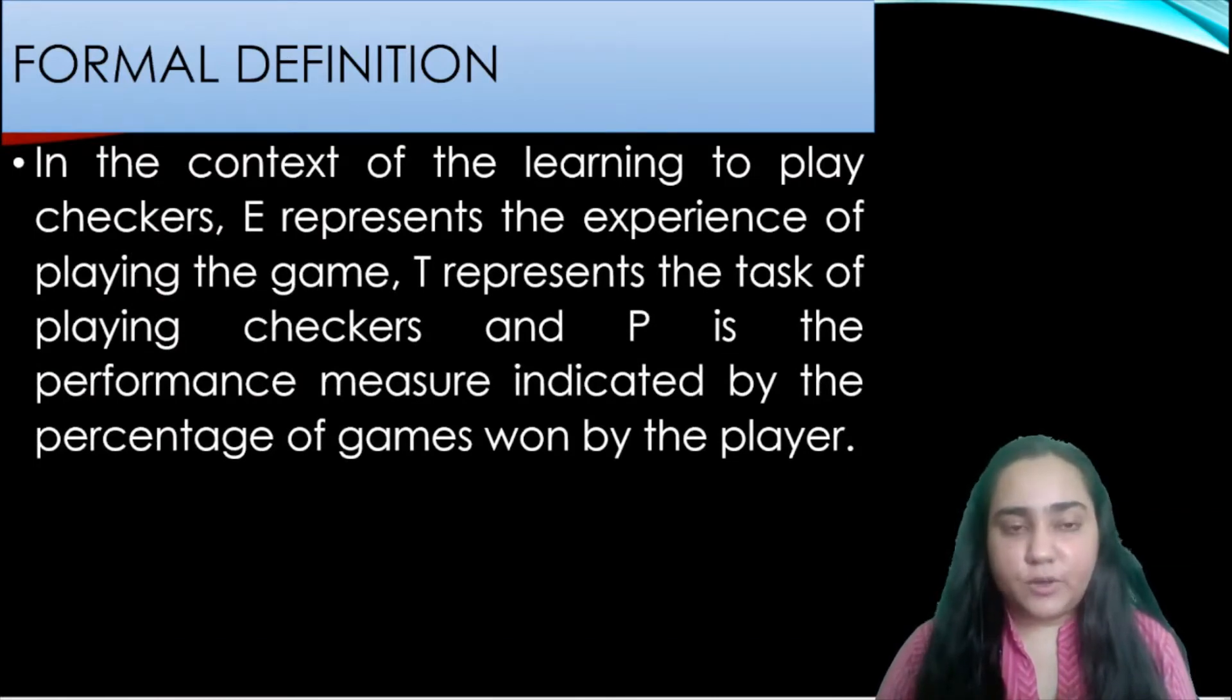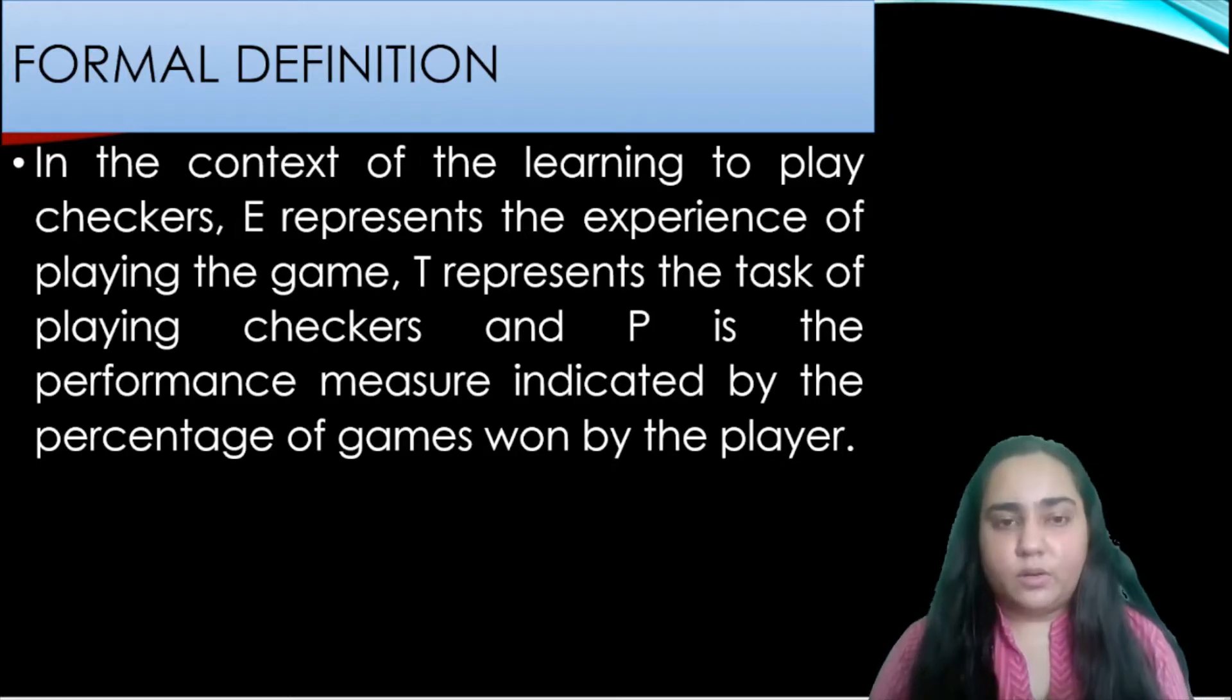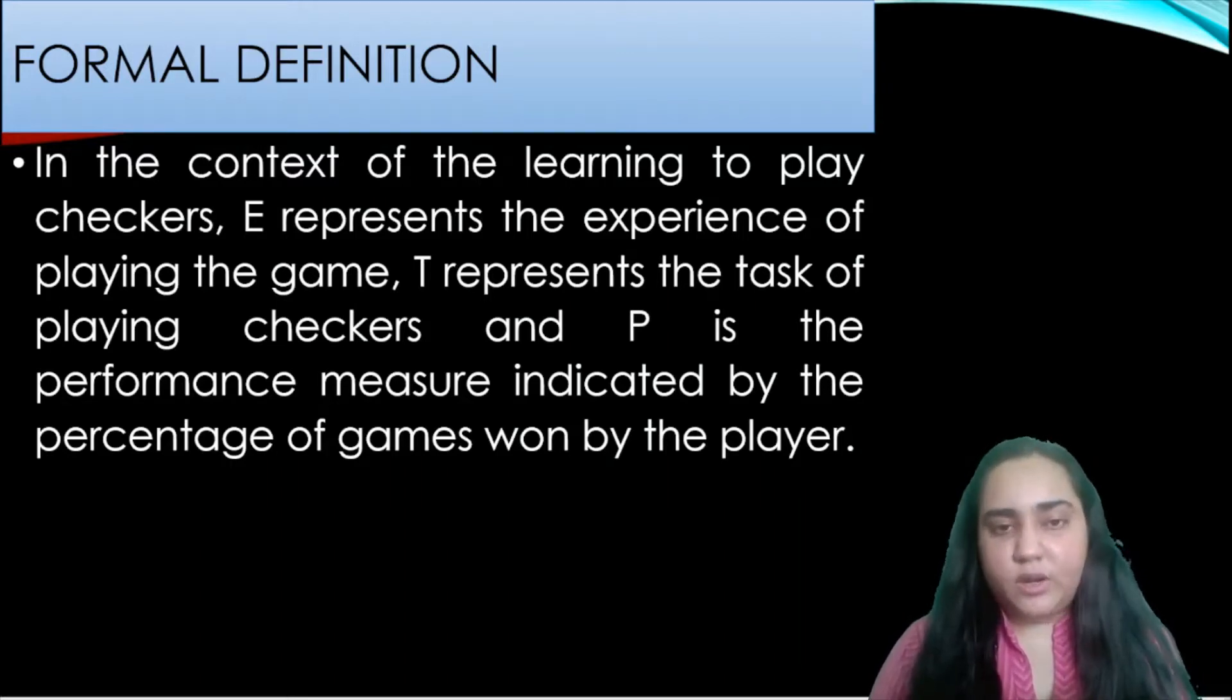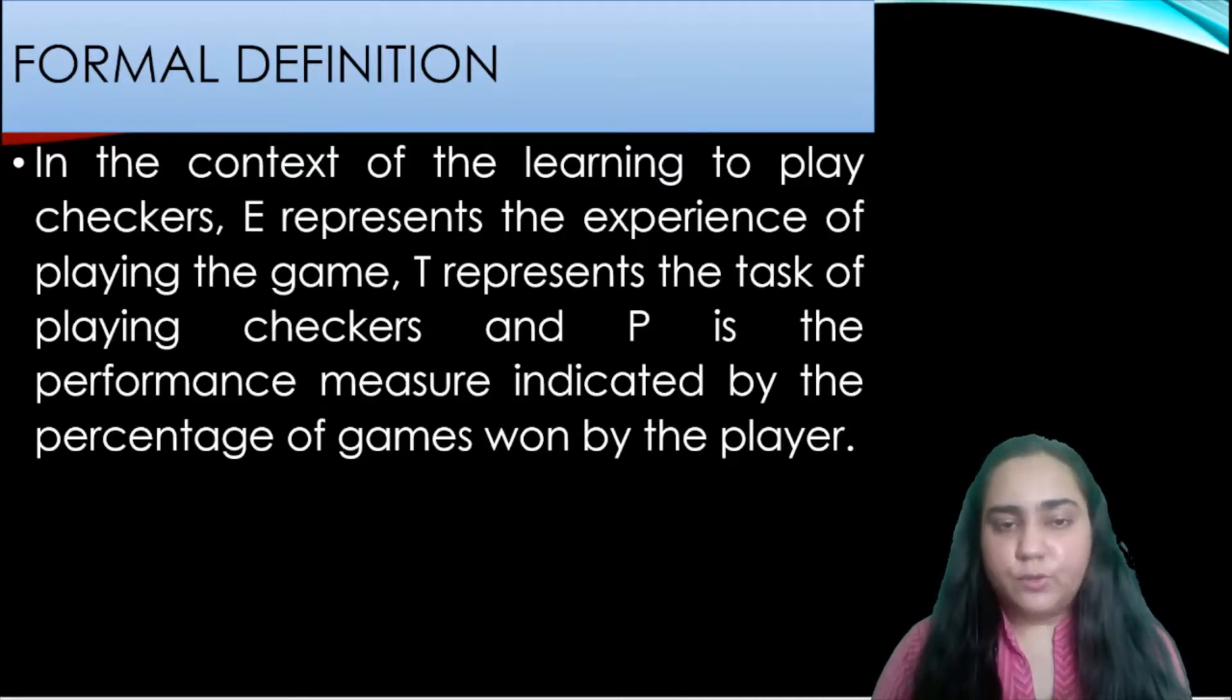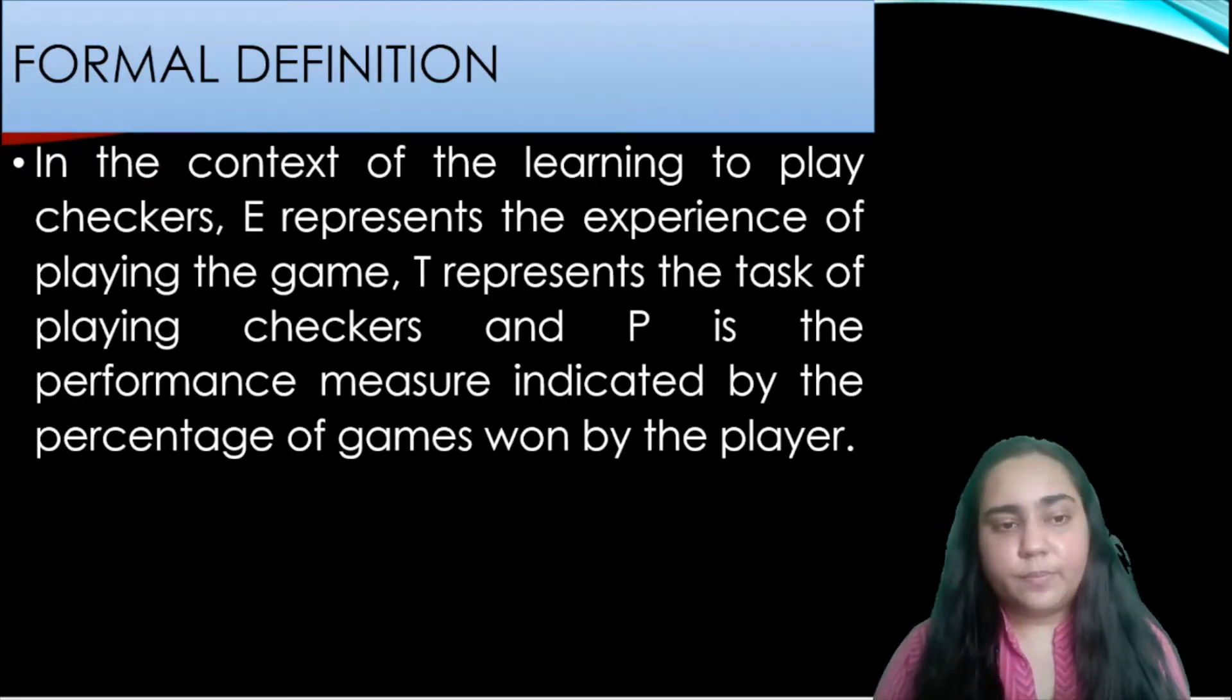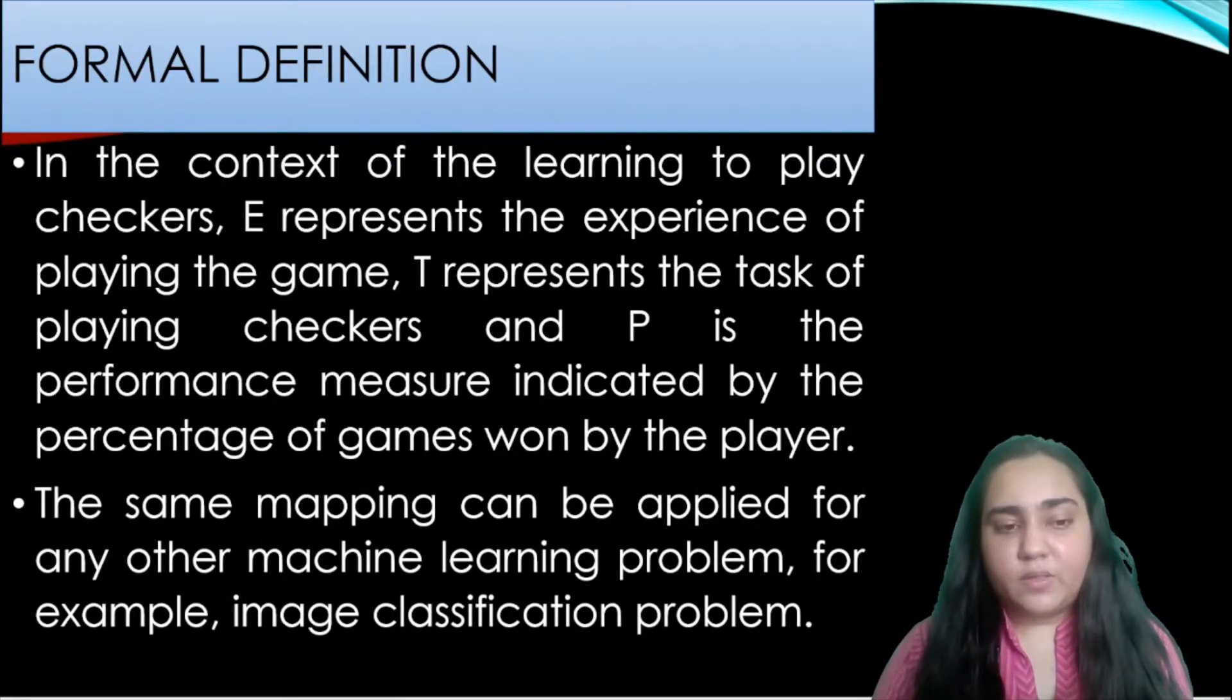In the context of learning to play checkers, checkers is a board game where you have several pieces on the board and you have to get all the pieces from one side to the opposite side. In that type of a game, E represents the experience of playing the game, T would represent the task of playing checkers and P is the performance measure indicated by the percentage of games won by the player. So in this context E, T and P are quite clear. And the same mapping can be applied for any other machine learning problem.